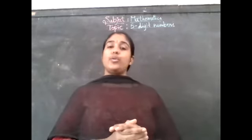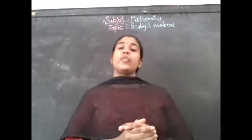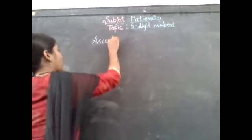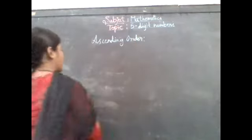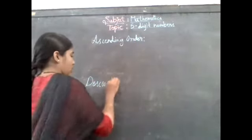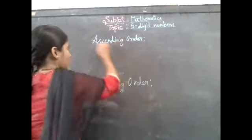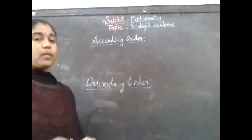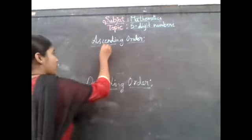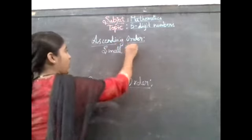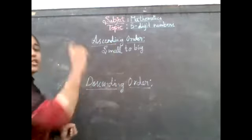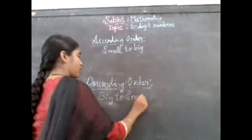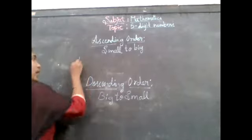In today's class we are going to discuss about ascending order and descending order. So what do you mean by ascending and descending? Ascending means small to big, and descending means big to small.